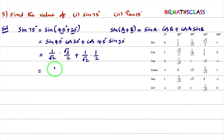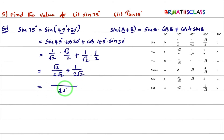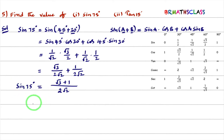Taking LCM = 2√2, the numerator becomes √3 + 1. So sin 75° = (√3 + 1)/(2√2).